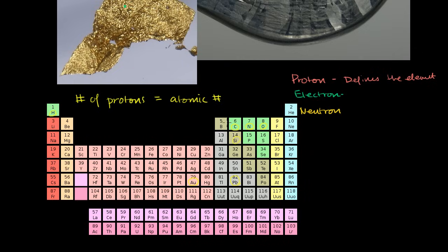For example, carbon has six protons. Carbon-12, which is a version of carbon, will also have six neutrons. So the nucleus of carbon-12 has six protons and six neutrons.